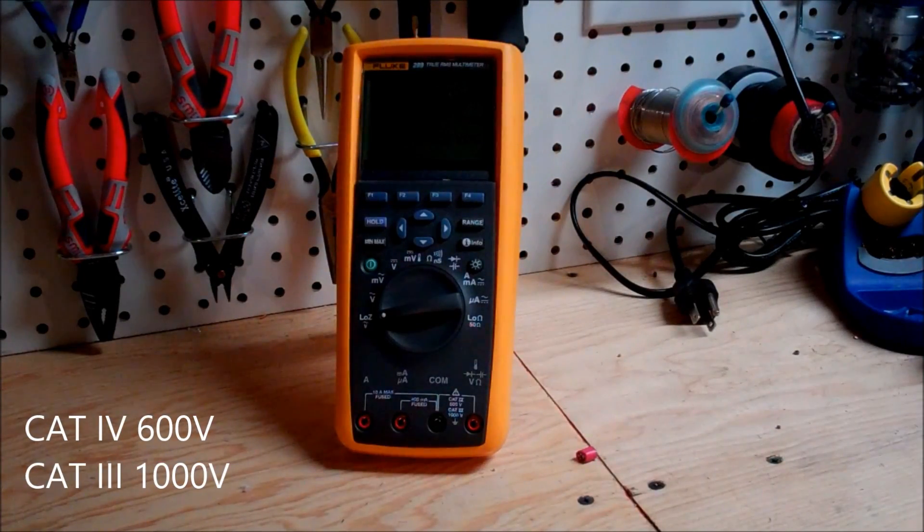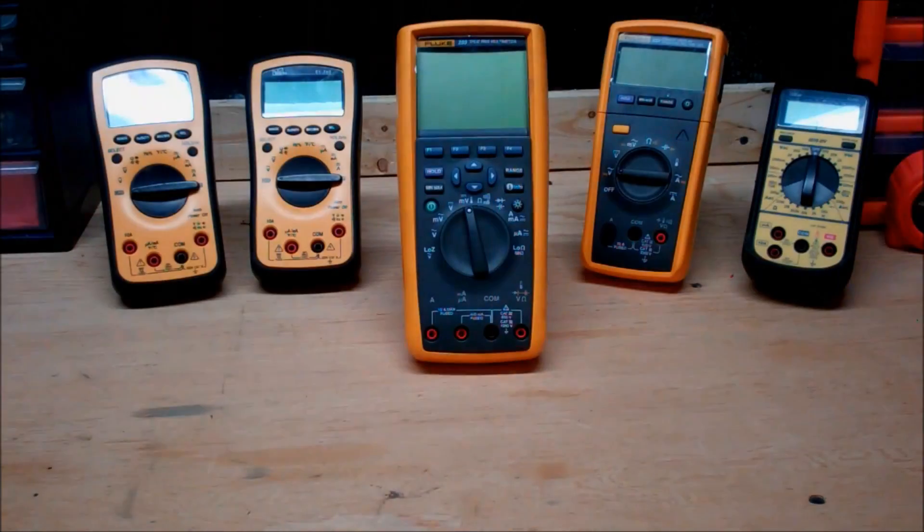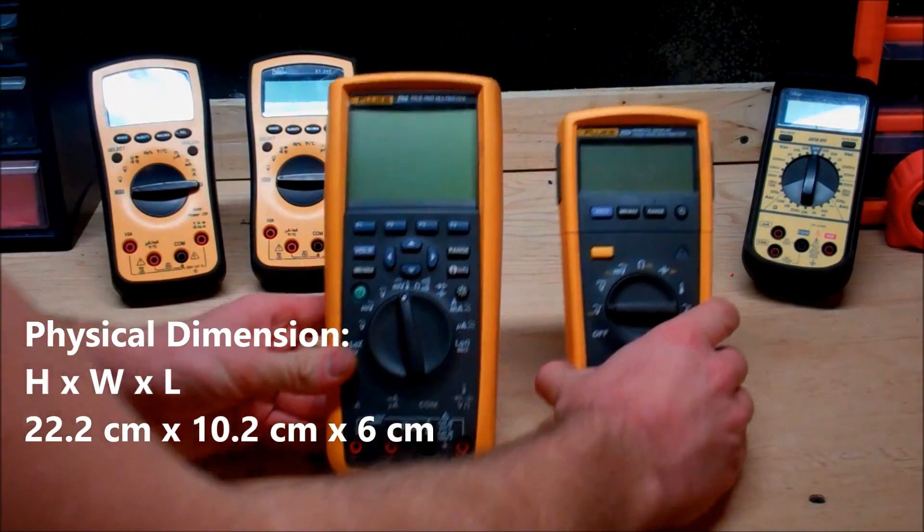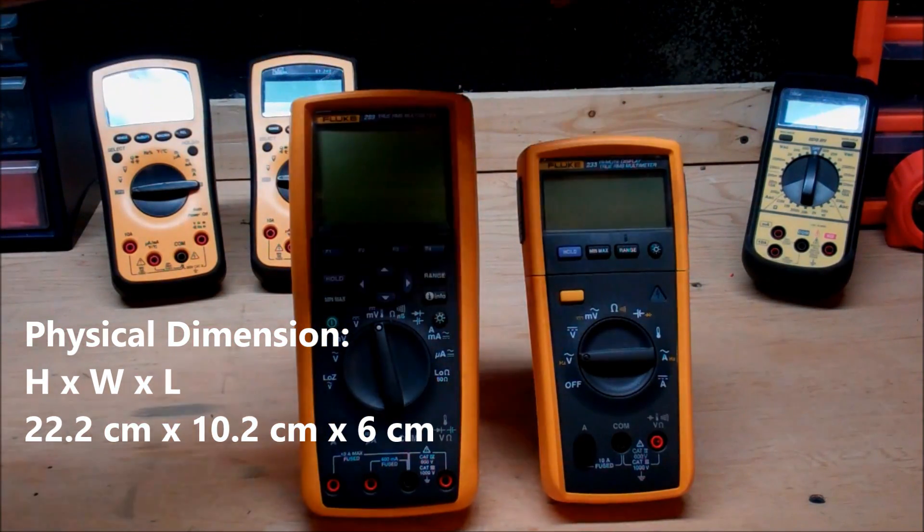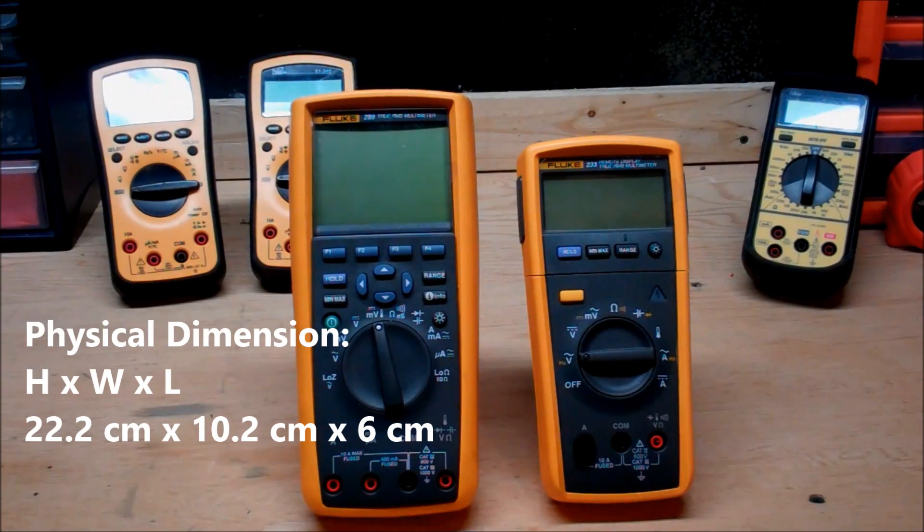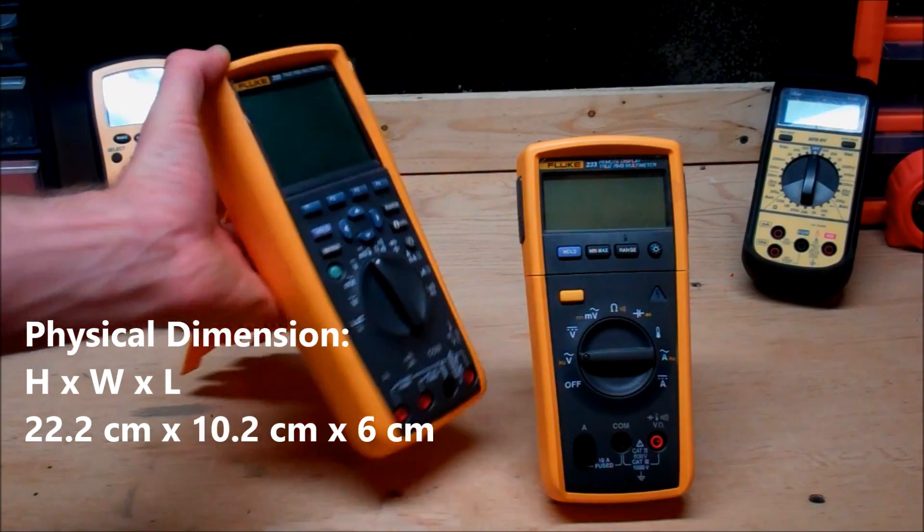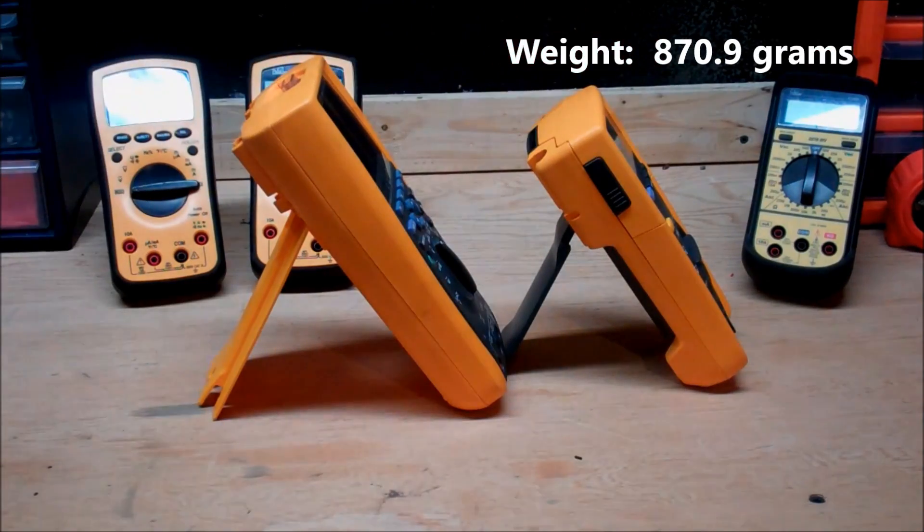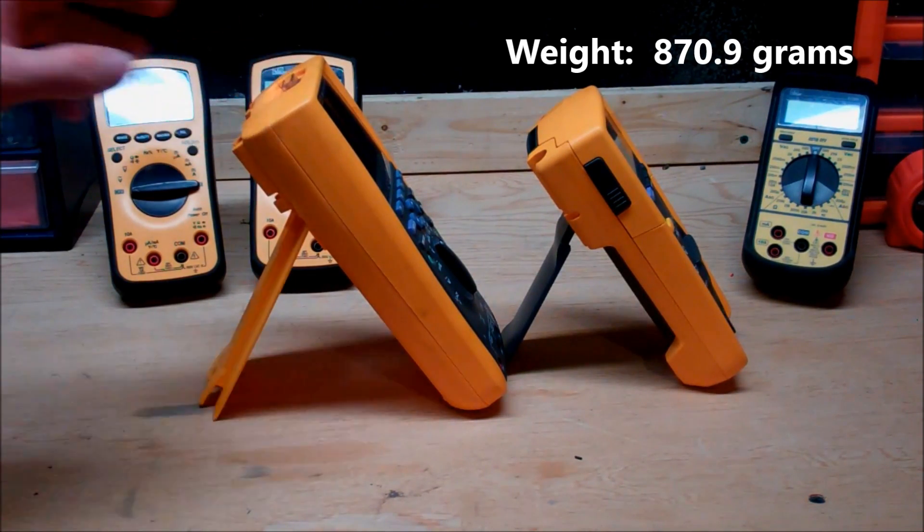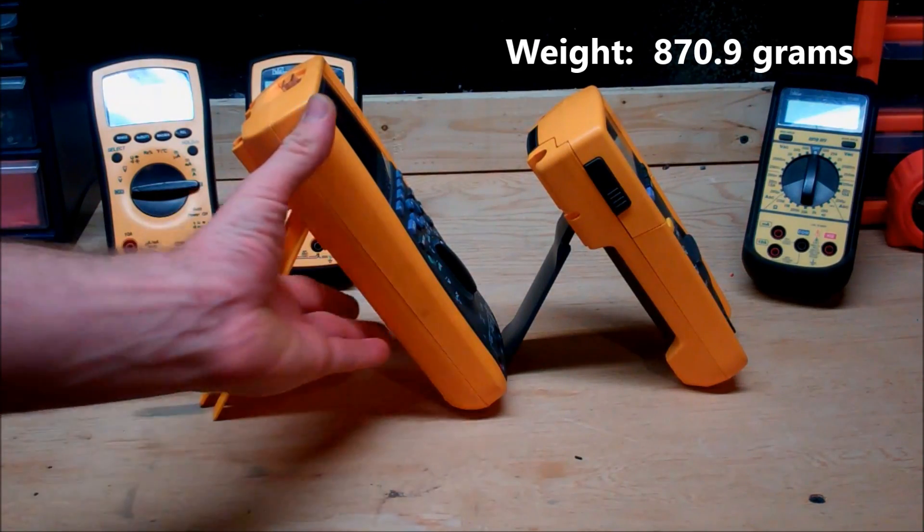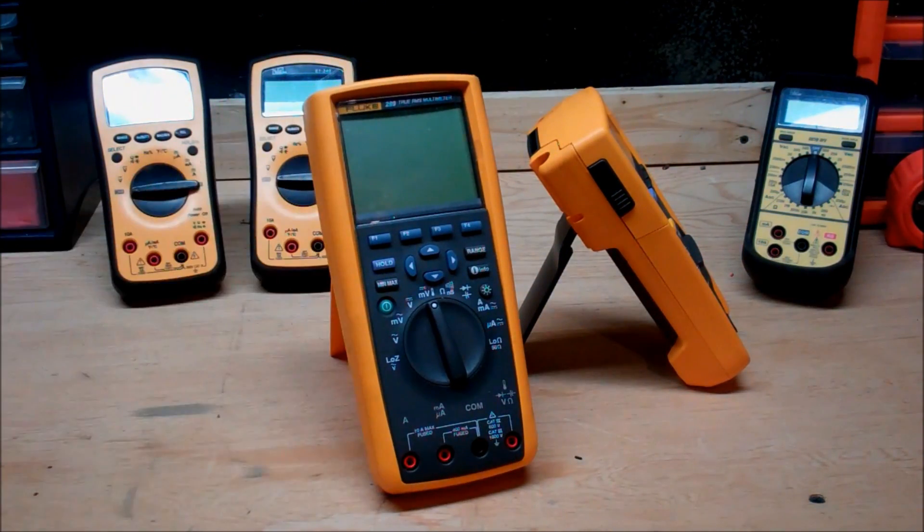Now the Fluke 289 is a category 4 multimeter under 600 volts or a cat 3 under a thousand. This thing's a beast in size. Look at the comparison here, I got a Fluke 289 on the left and a Fluke 233 on the right. This thing is a demon in size. If you compare the side profiles, you can see this has a large footprint. As a benchtop meter or something you're using in a lab, these things are awesome, but if you're throwing this in your tool bag it's going to take up a large amount of room. The problem is it just has so much ability that you overlook it all.